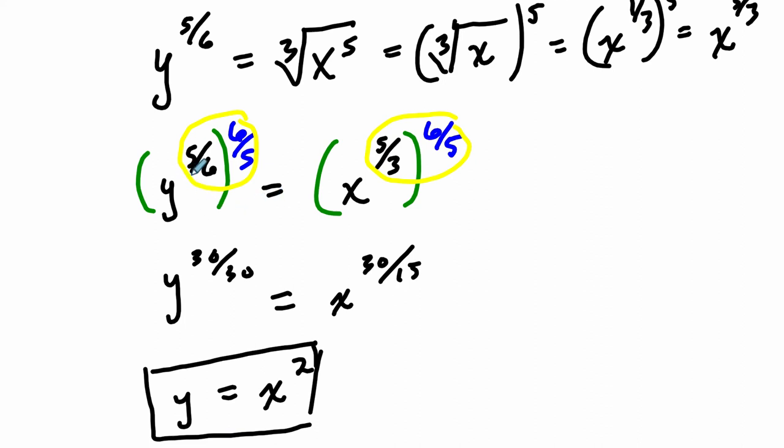If you don't like doing it that way, you can do it in parts. So you can first undo the fifth power by taking the fifth root of both sides. You get some stuff, then you undo the sixth root by taking the sixth power of both sides. And it will still get you the same result.